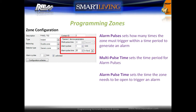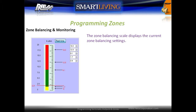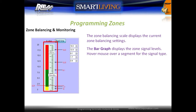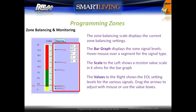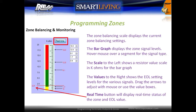Alarm Pulse Time sets how long the zone must be open to generate an alarm. The zone balancing scale displays the current zone balancing settings. The bar graph displays the various zone signal levels, and hovering over a segment will display the signal type. The scale to the left shows the resistor value scale in kilo ohms. The values to the right show the current end-of-line setting levels — drag the arrows to adjust with the mouse or use the value boxes. The real-time button displays the real-time status of the zone and the current end-of-line value when the zone is sealed.